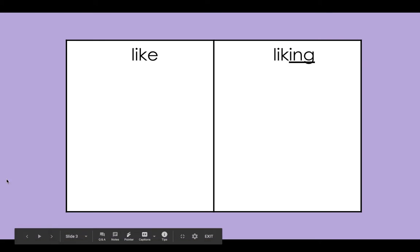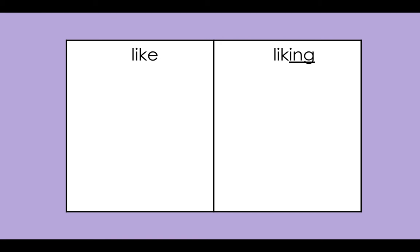Once you've done that, we're gonna write two words — one on each side of the chart. On one side you're gonna write the word "like," and on the other side you're gonna write the word "liking." Pause the video now to do this. Now that you've written "like" and "liking," make sure the "-ing" is underlined. This is the pattern that we are gonna focus on.